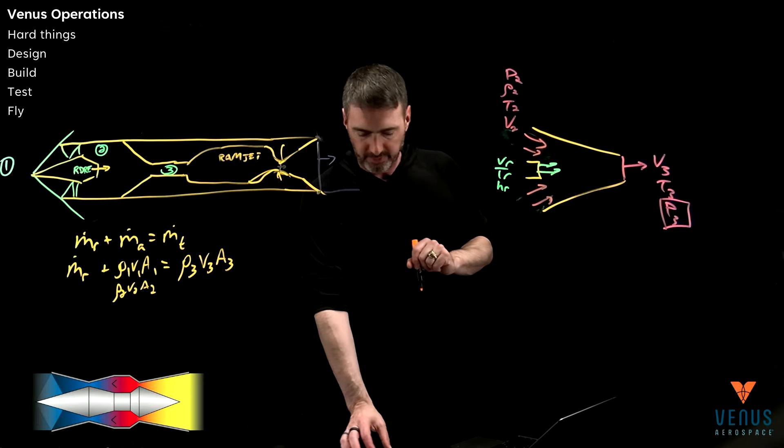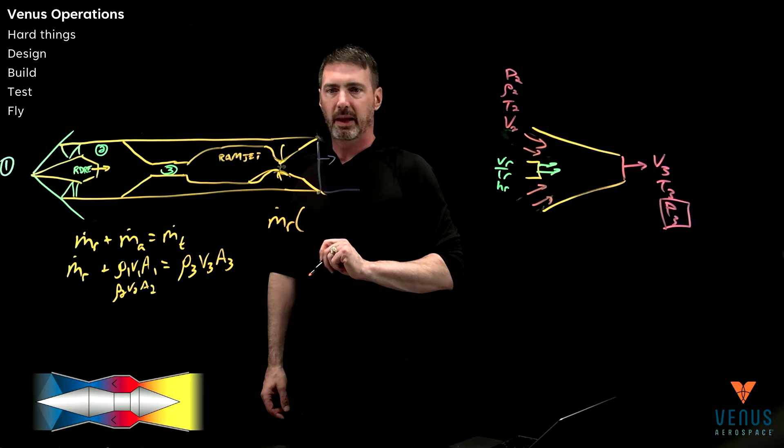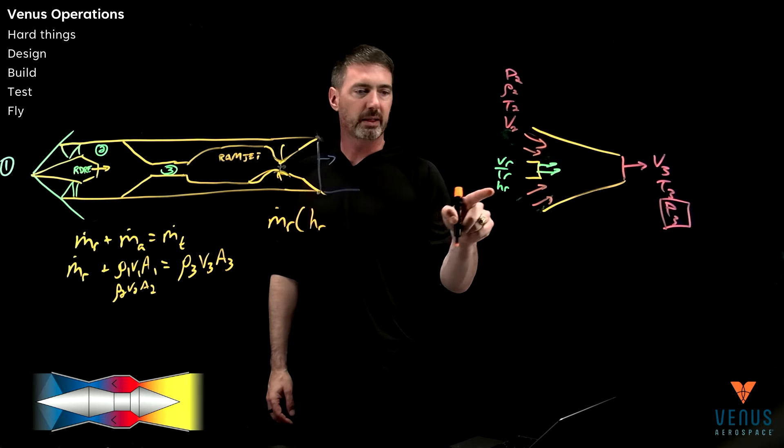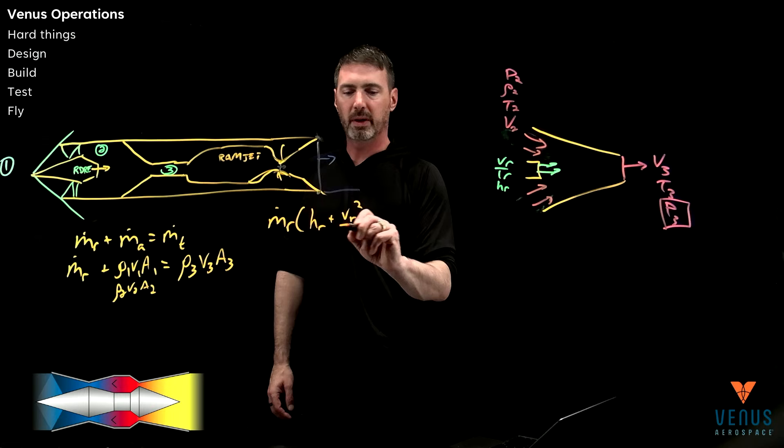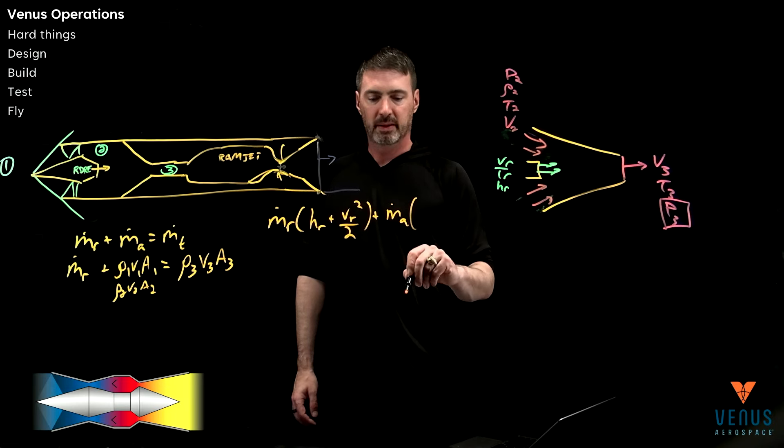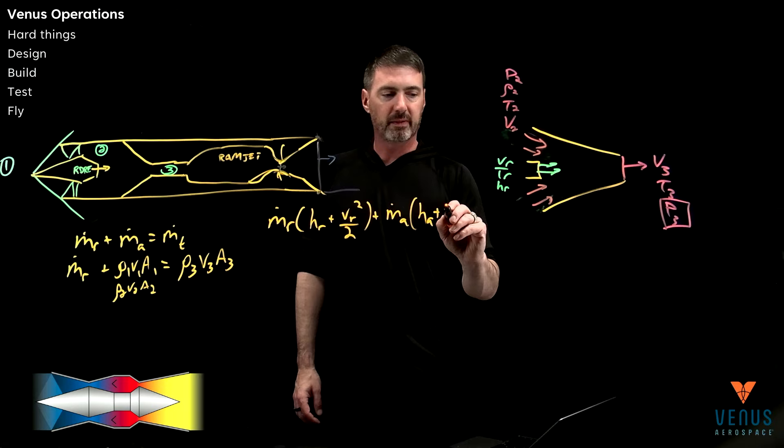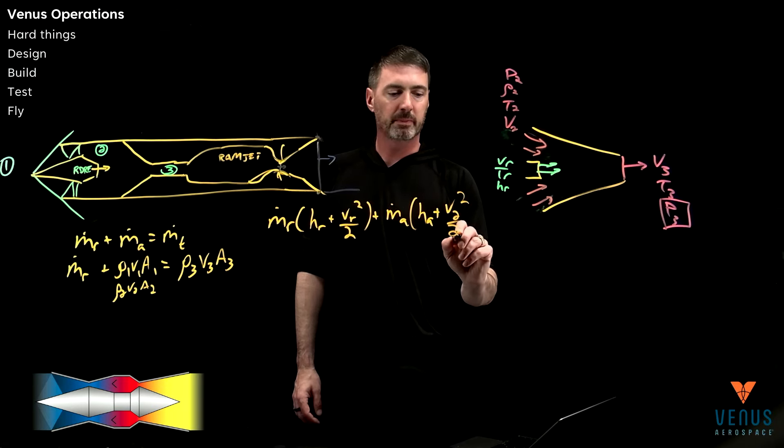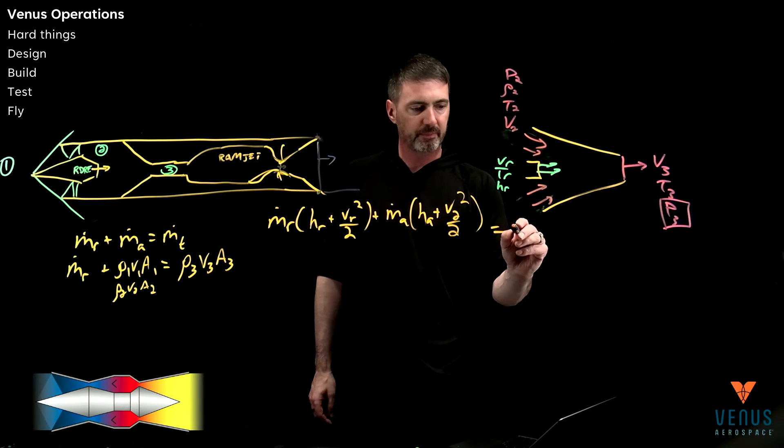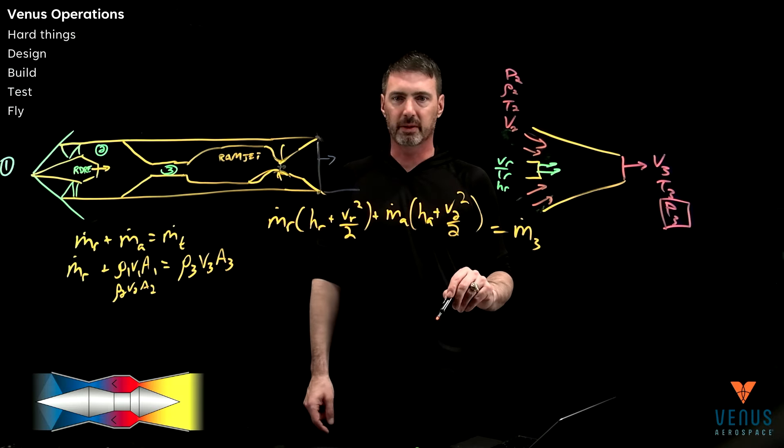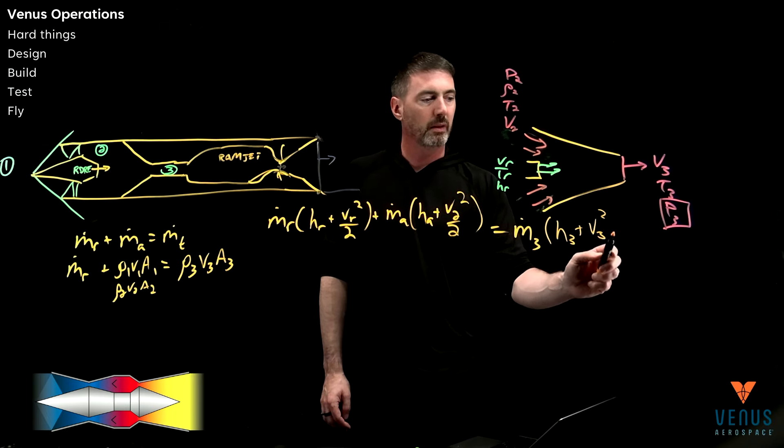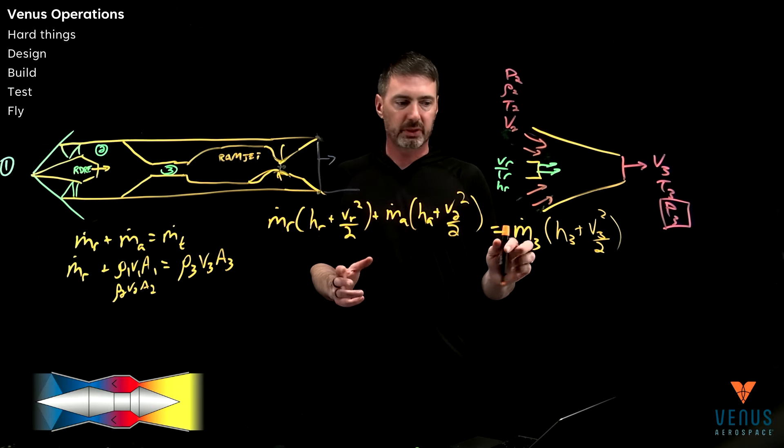From that point of view, you have the mass flow of the rocket and the enthalpy here - you can think of it as specific heat if you want to, but I'll just say that's the enthalpy of the rocket - and then you have that kinetic energy, VR squared over two. That's the energy coming in from the rocket. You have the energy coming in from the air: enthalpy of the air, keeping this consistent, V2 squared over two. And that is equal to the energy on the back side, which is m dot three, which we know is just the total here.